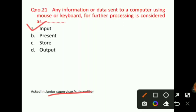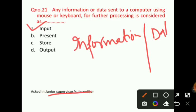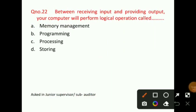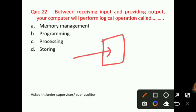Question number 22: Between receiving input and providing output, your computer will perform logical operations called — the computer takes input, generates output, and in between performs some logical operations. The correct answer for question number 22 will be option C, that is, processing. This question was asked in a junior supervisor sub-auditor shift.